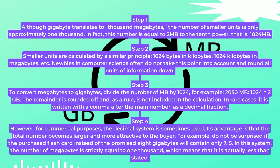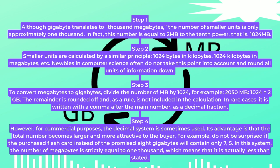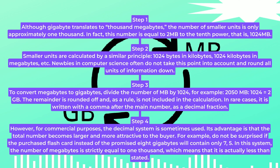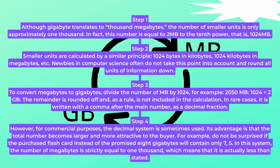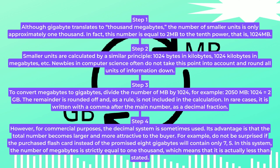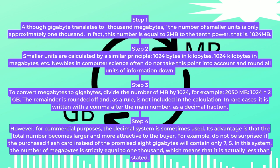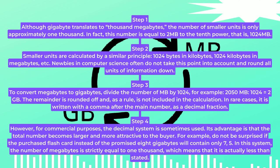Step 4. However, for commercial purposes, the decimal system is sometimes used. Its advantage is that the total number becomes larger and more attractive to the buyer. For example, do not be surprised if the purchased flash card instead of the promised 8 GB will contain only 7.5. In this system, the number of megabytes is strictly equal to 1000, which means that it is actually less than stated.